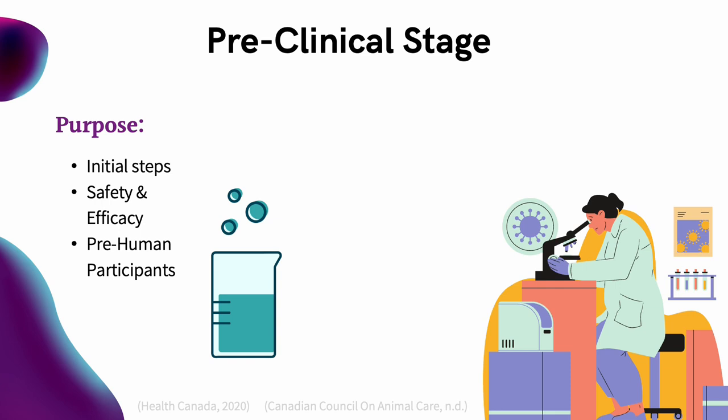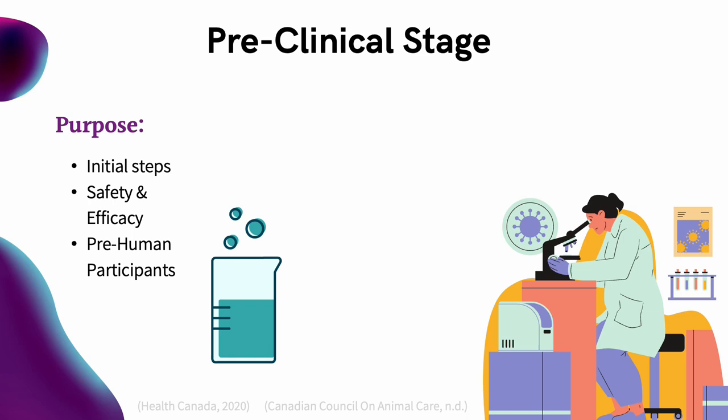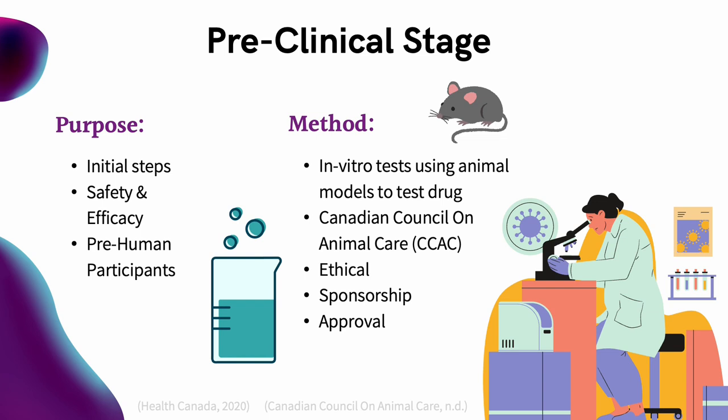Starting with the preclinical stage. Preclinical studies are the initial steps taken toward drug development. The purpose of this stage is to prove a certain level of safety and efficacy prior to human application. This is usually done through animal testing, as animals model human conditions. It's important to note that the Canadian Council of Animal Care oversees animal testing to ensure that practices are ethical within Canada.